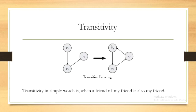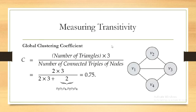Now let us see how we measure transitivity in a social media graph. Transitivity can be measured using two ways: the global clustering coefficient and the local clustering coefficient. The global clustering coefficient is mainly computed for a network, whereas the local clustering coefficient is computed for a single node.